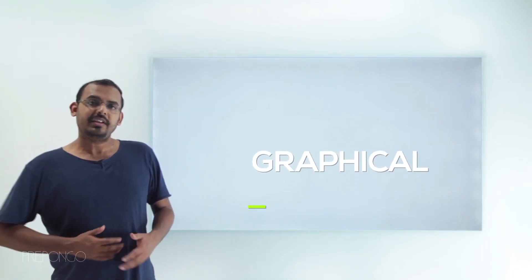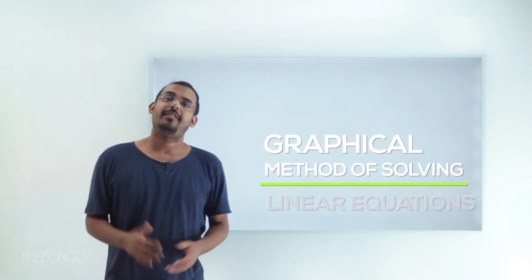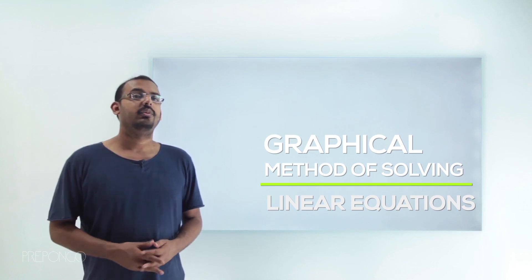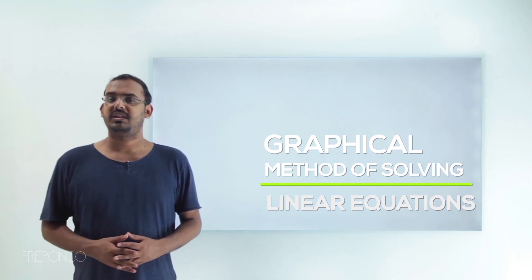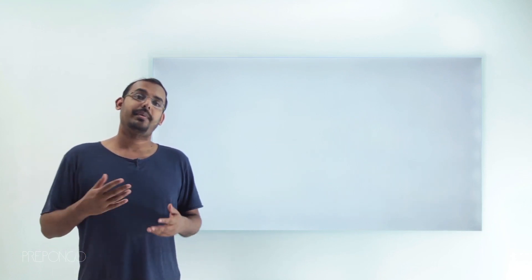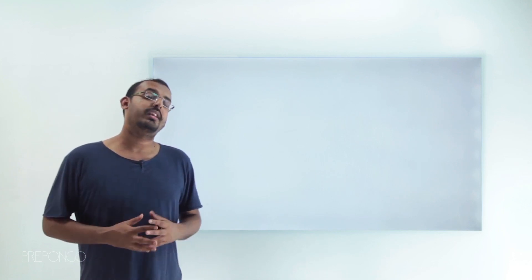Hello everyone. In the previous lecture, we looked at some terminology associated with a pair of linear equations in two variables. We saw what we mean by a pair of linear equations in two variables and how we represent this pair of linear equations on a graph. We also saw three different kinds of graphs that can be formed by a pair of linear equations in two variables.